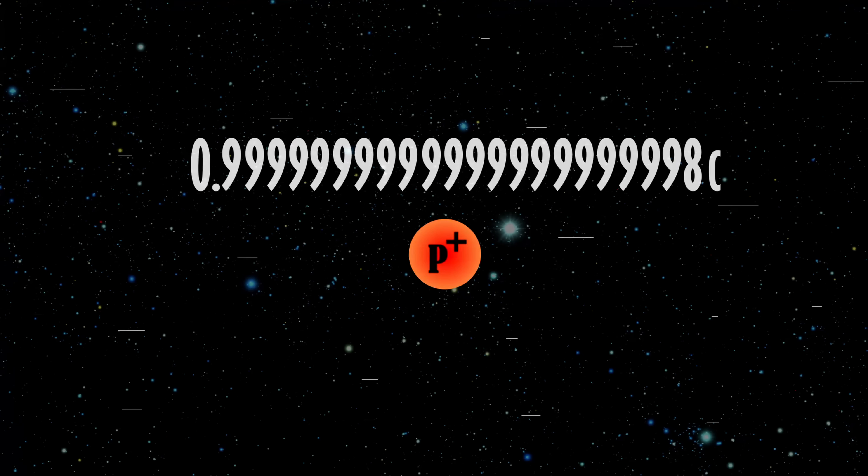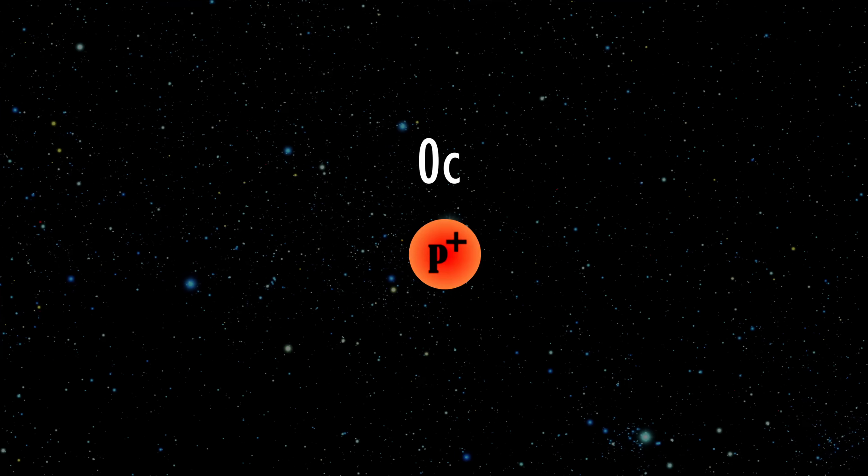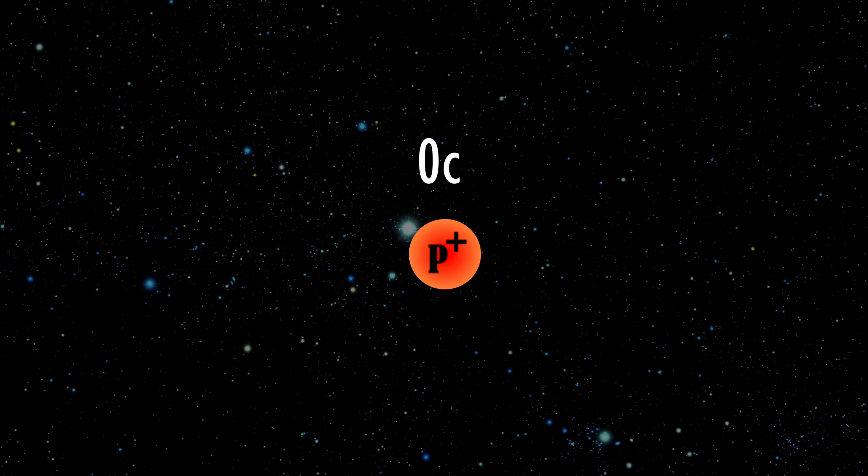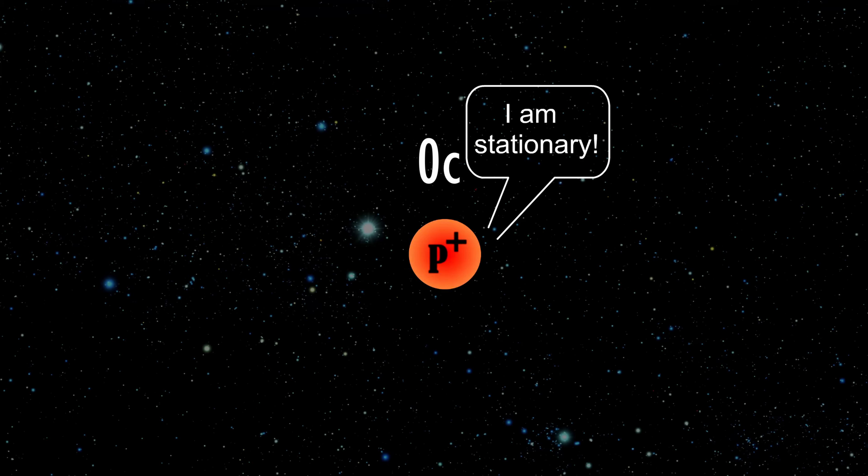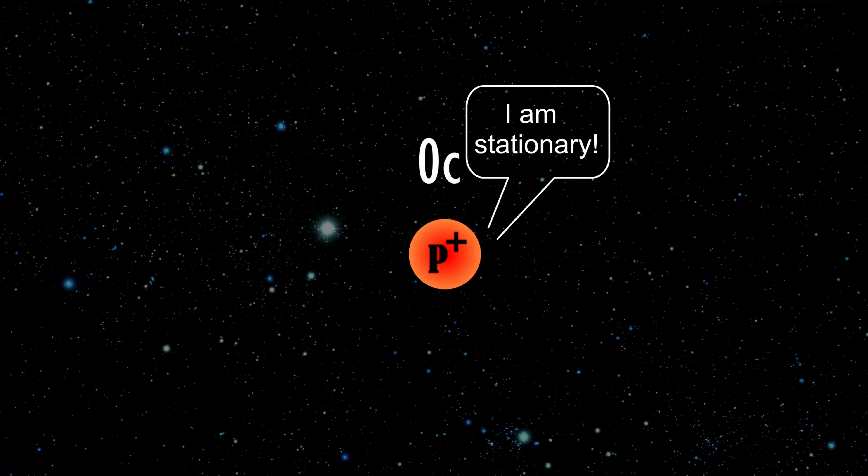But why can't protons travel through the universe faster than this particular speed? And isn't this breaking the principle of relativity? According to this principle, there is no absolute motion, and therefore there is a reference frame in which the proton is at rest, in which the physics should be the same as in any other inertial reference frame. So why should anything weird happen to the proton beyond a particular speed, and what is this speed relative to?